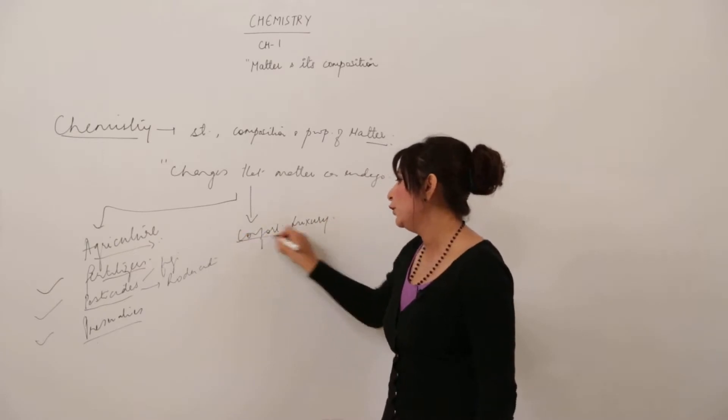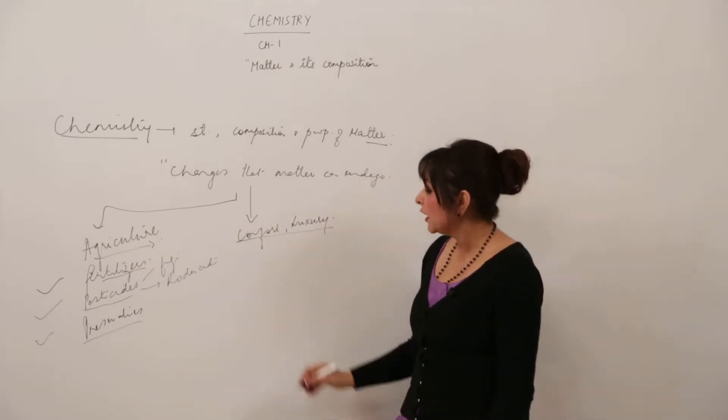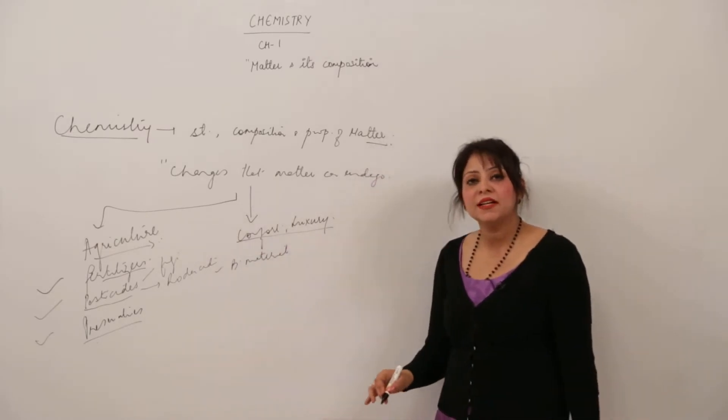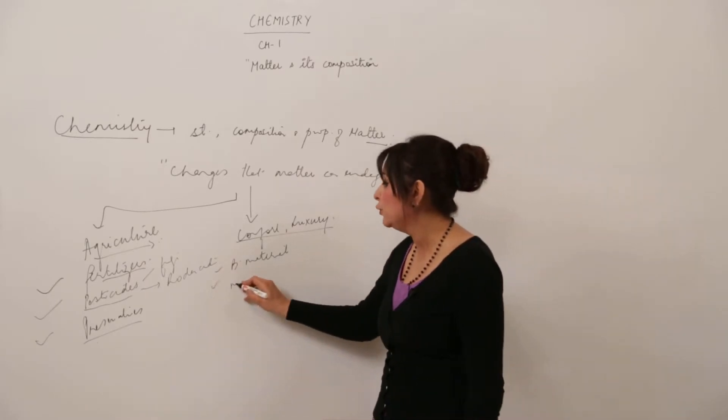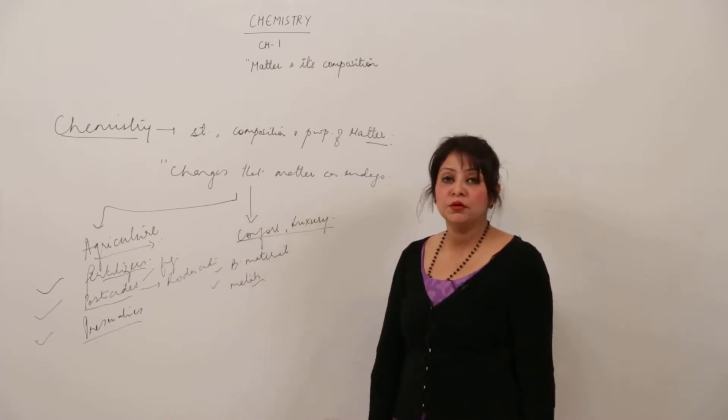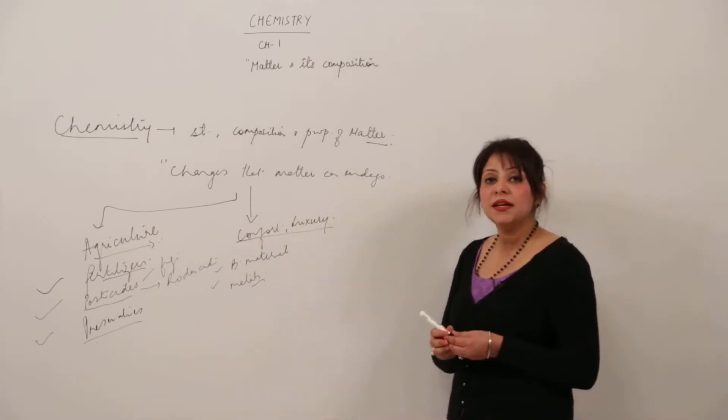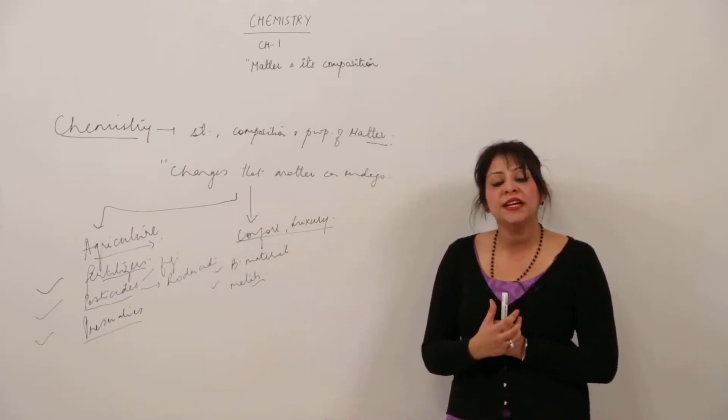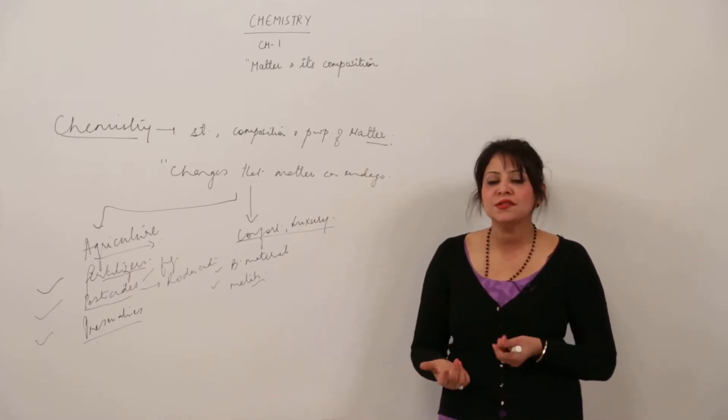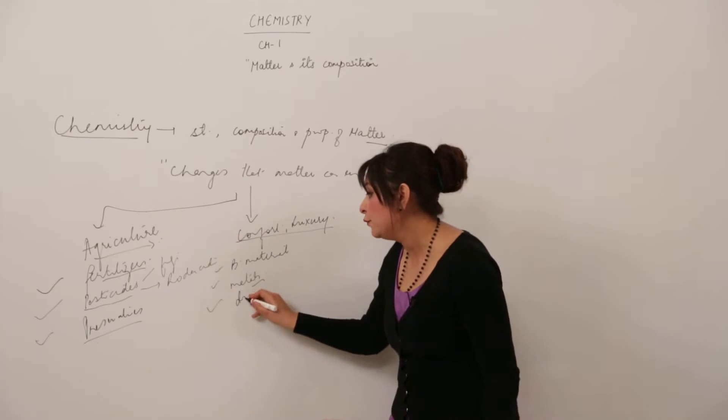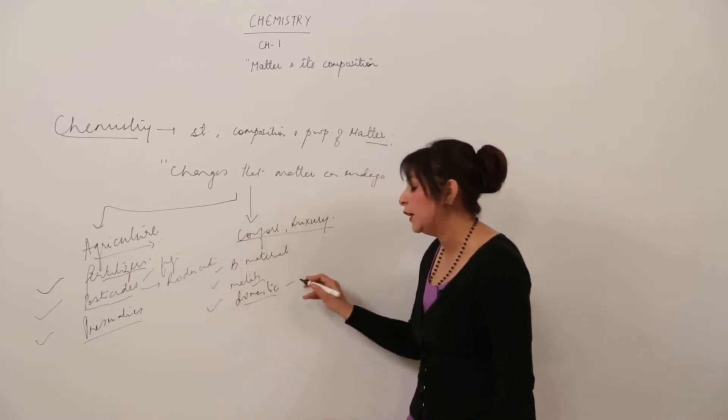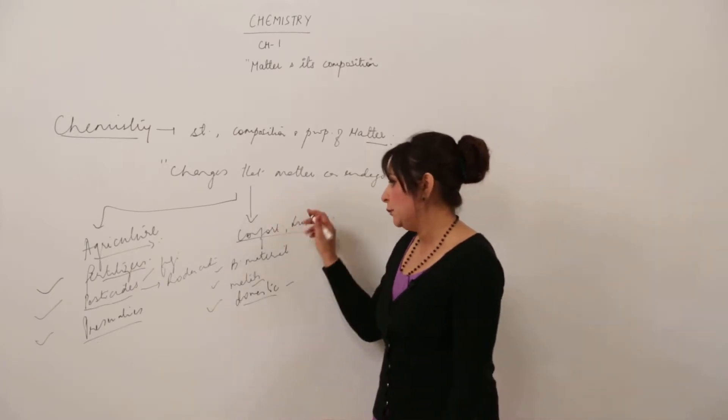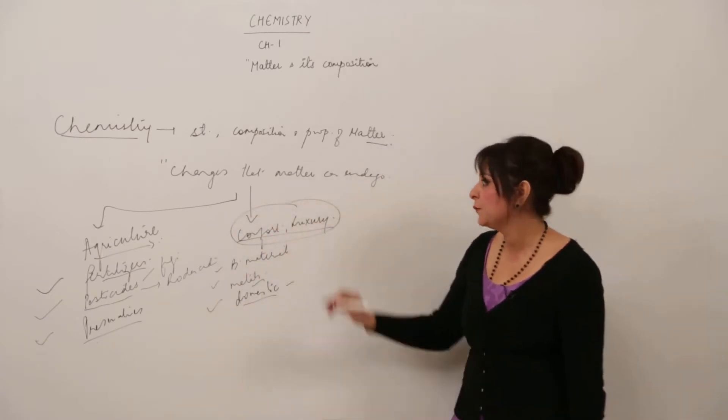How is it helpful in comfort and luxury? Building materials like cement and sand are chemical compounds. Metals are also chemical compounds—they're reactive and don't occur in nature as such, but in combined form as ores. Chemistry is used to extract metal from ore. We have many domestic articles like perfumes and cosmetics—all chemical compounds.